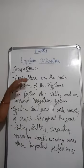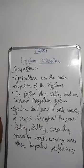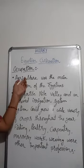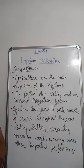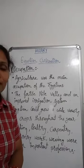Besides agriculture, some other important professions were fishing, poultry, carpentry, machinery work, and weaving. These are the occupations of Egyptian civilization.